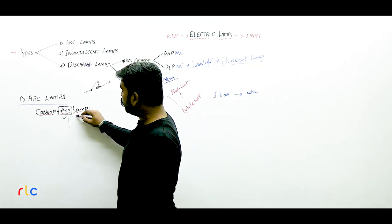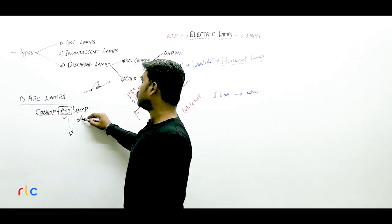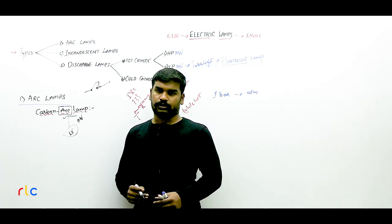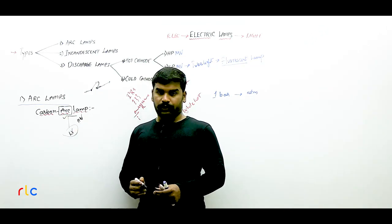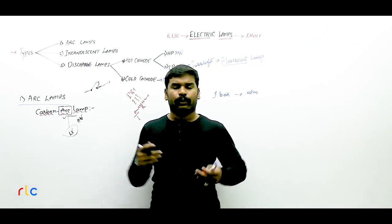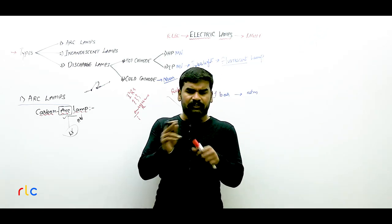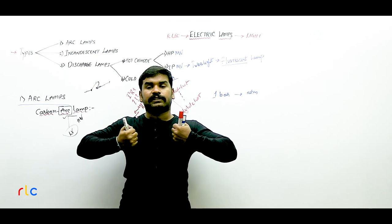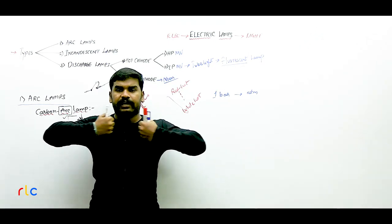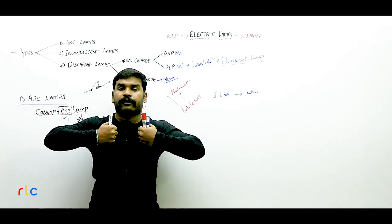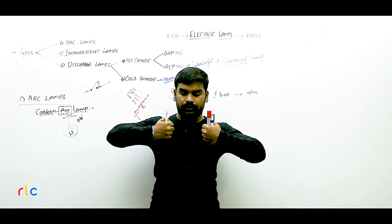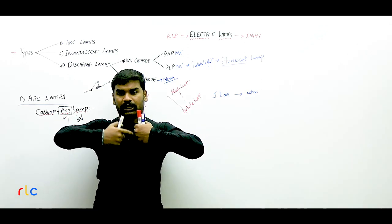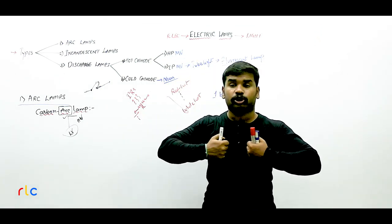To produce an arc there are two techniques — one requires low voltage and the other requires high voltage supply. In the high voltage method, two electrodes are separated in air by an air gap and supplied with a voltage. Normally there is no conduction because air between the electrodes is an insulator.